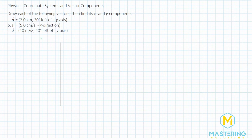Just like we did before, let's draw these vectors first and then we'll find the x and y components. For vector d, they say that it is 2 kilometers, 30 degrees left of the positive y-axis. So it's positive and 30 degrees to the left. We have 30 degrees right here and vector d is 2 kilometers.